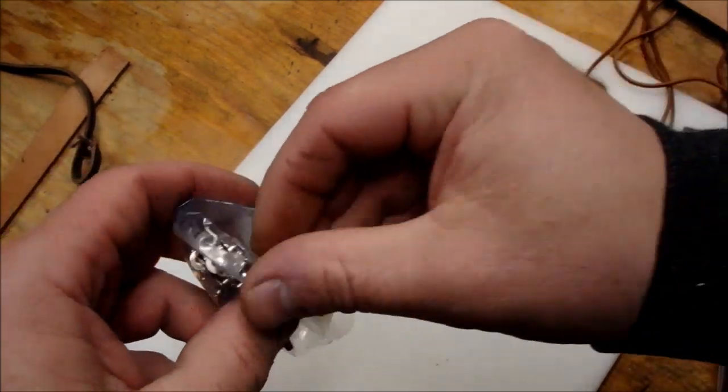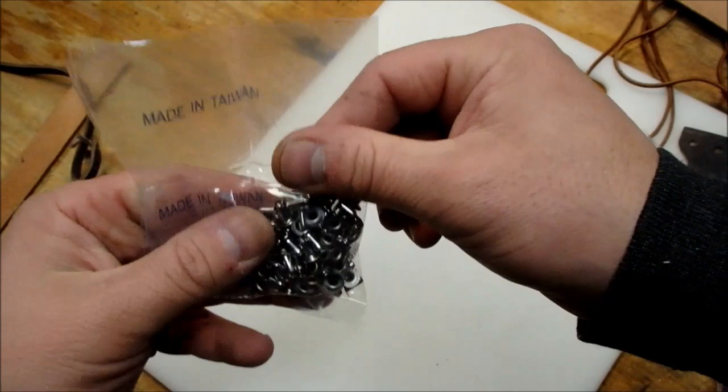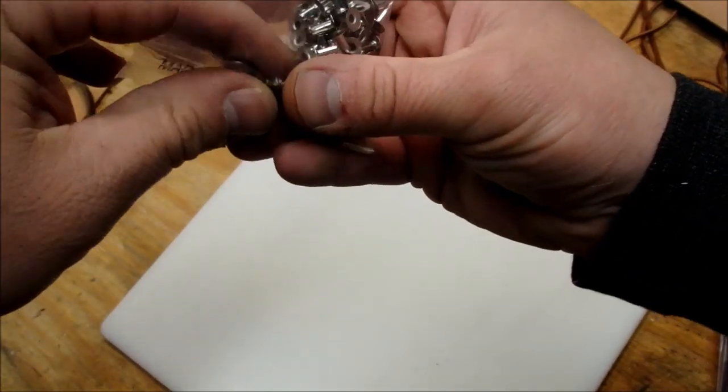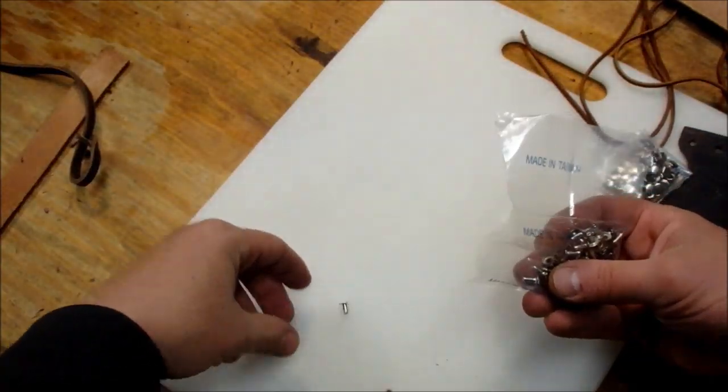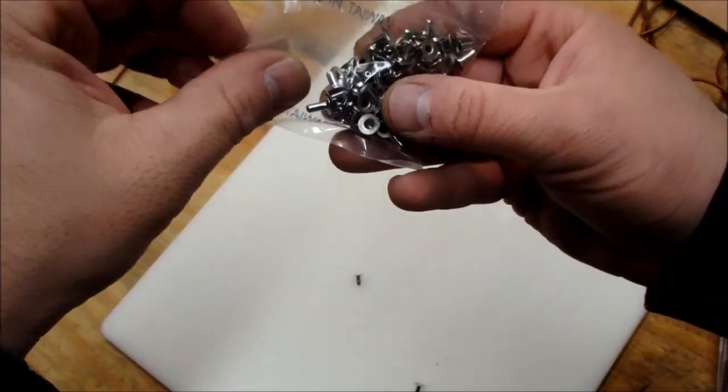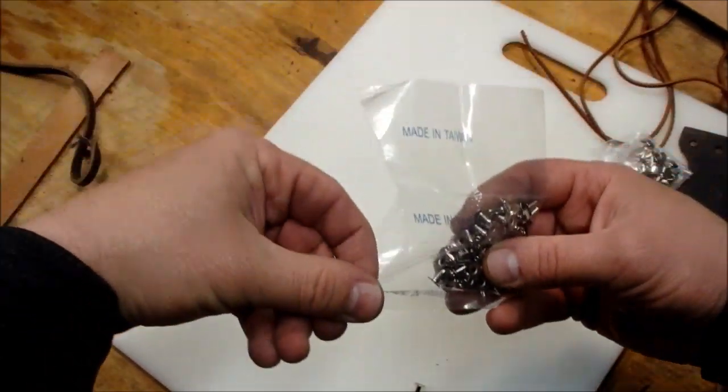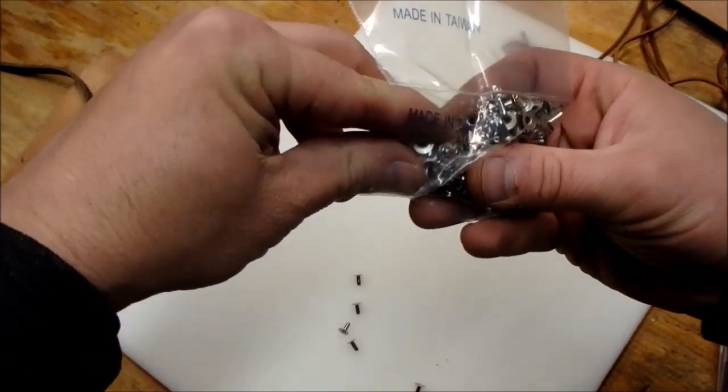These rivets you can buy. Some of the hobby stores have them. I think some of the big box stores carry them. Home Depot, Lowe's, that type of stuff. But these came from Tandy Leather. You can also get them from Hobby Lobby.